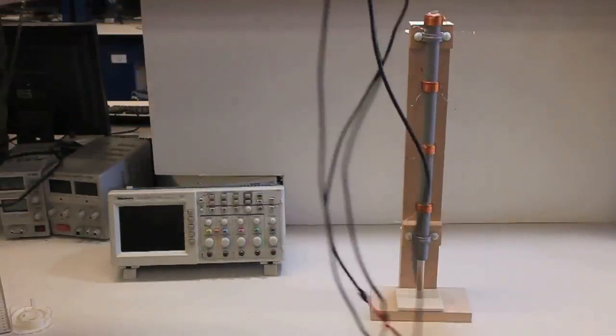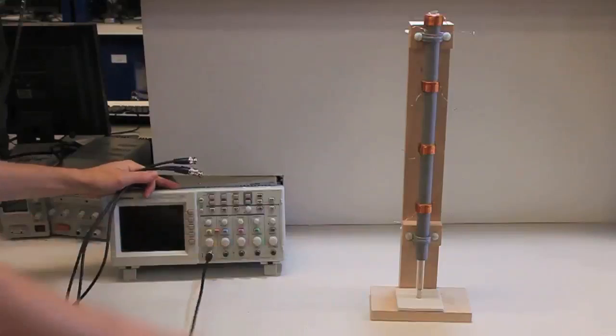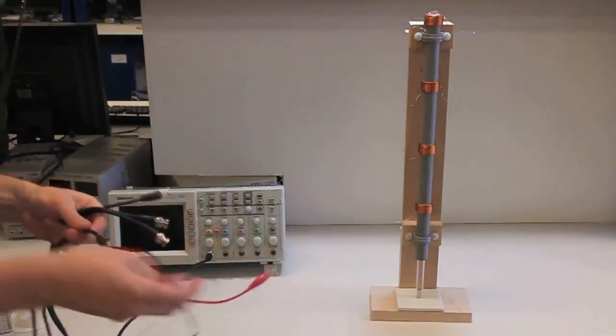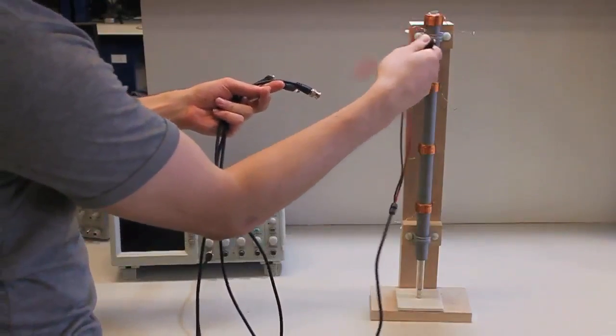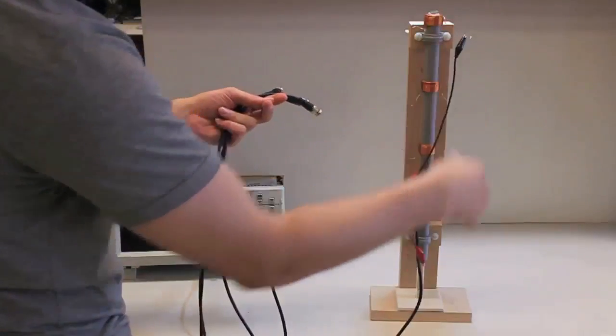In the first part of the lab, you will measure the back EMF using a test station. First, measure the position Y of each coil using a ruler. Then, connect the four coils of the test station to the four channels of the oscilloscope.